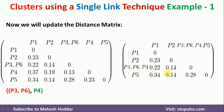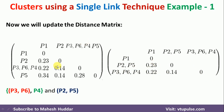From the resulting matrix, we find the minimum distance again. In this case, 0.14 appears twice. Because I have taken only two decimal places, both show 0.14, but if you consider more decimal digits, one is smaller. Taking the minimum as the distance between P2 and P5 at 0.14, we merge P5 into P2 and remove the P5 row and column.